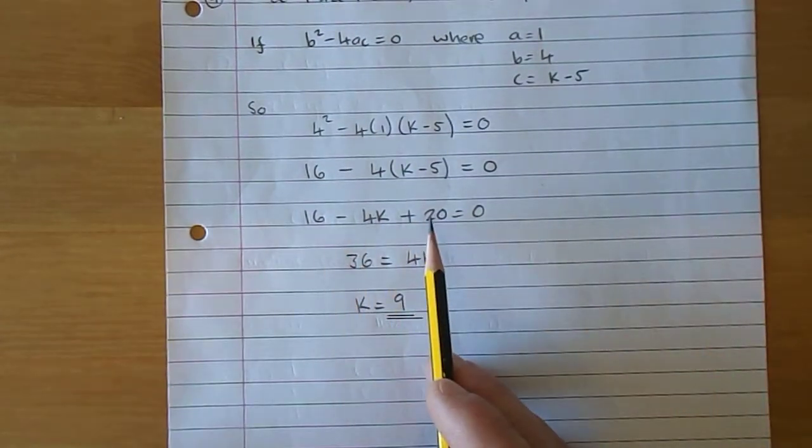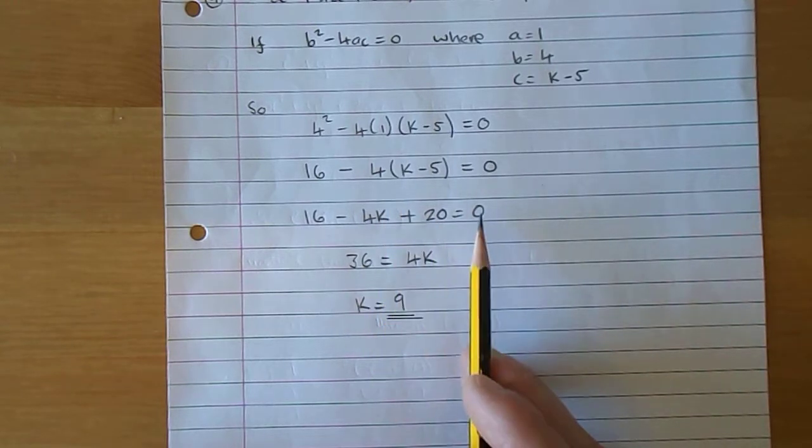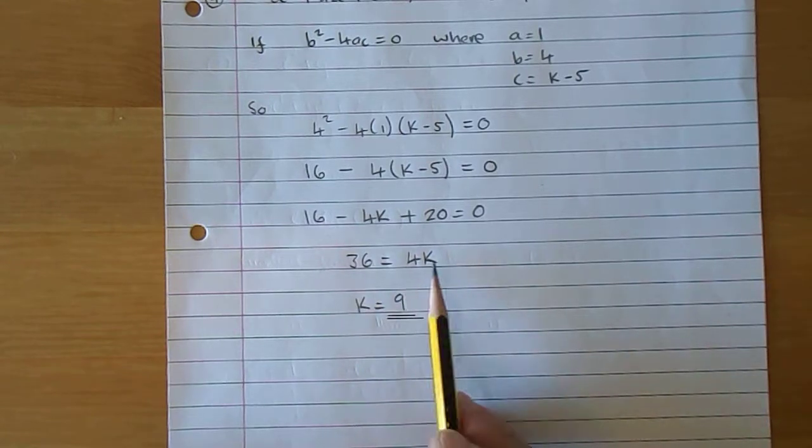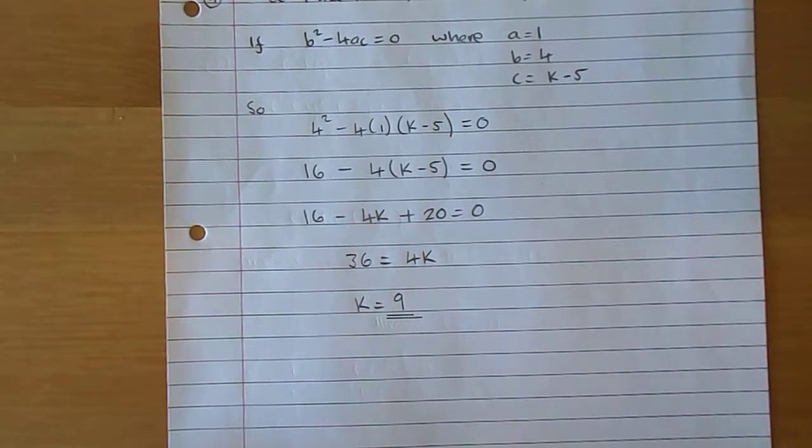16 add 20 of course is 36, move the 4k over, change the sign. So 36 equals 4k, 36 over 4 gives you k, so k is 9.